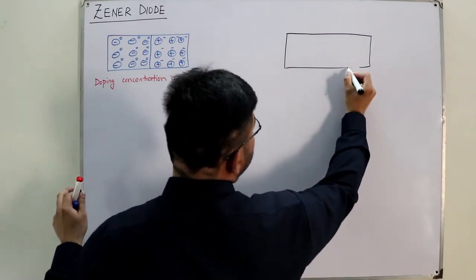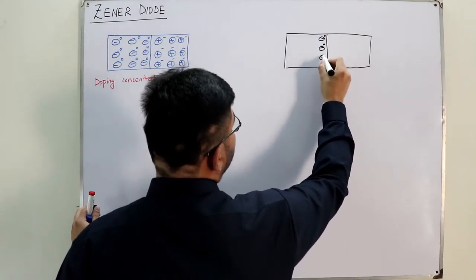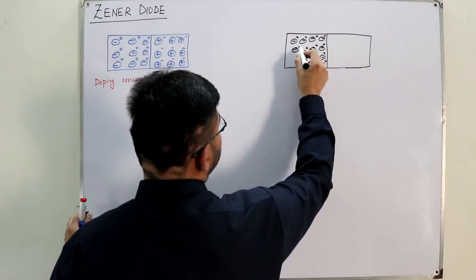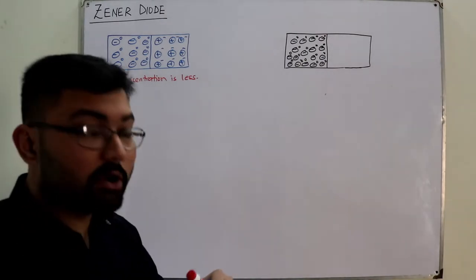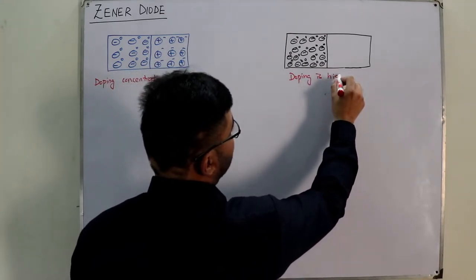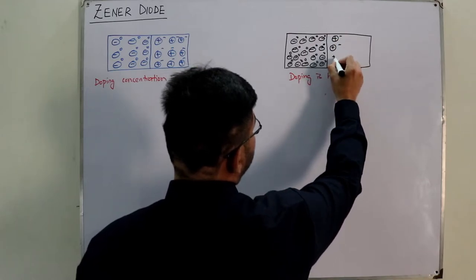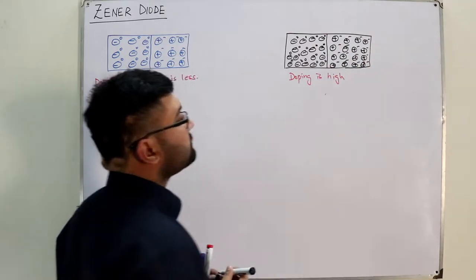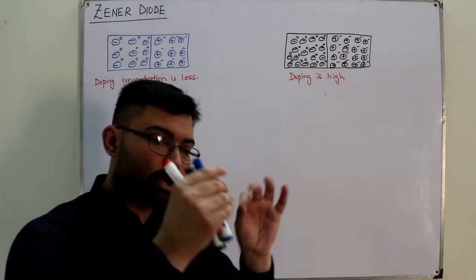In the Zener diode, this is the junction, and again you have negative ions with holes on the p-side. The key difference: in the Zener diode the doping concentration is high — and this high doping is what plays the overall role. Similarly on the n-side the doping is also high.